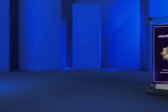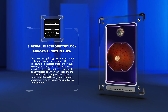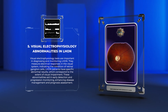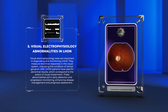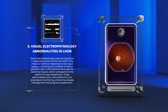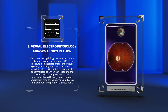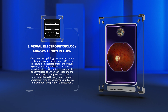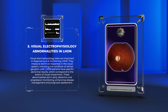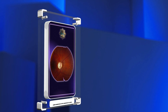Visual electrophysiology tests are important in diagnosing and monitoring LHON. They measure electrical responses in the visual system, indicating the condition of retinal ganglion cells. Patients have specific abnormal results corresponding to the extent of visual impairment, aiding in early detection, progression monitoring, and prognosis assessment.